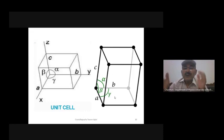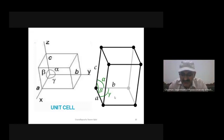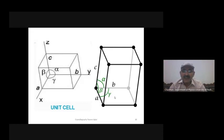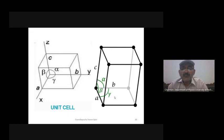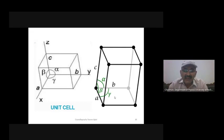The lattice parameters of a crystal are a, b, c and alpha, beta, gamma. As you move from lower symmetry towards higher symmetry, the number of independent lattice parameters decreases. In the cubic system — the most symmetric — only a is needed to describe the unit cell, since all angles are 90° and a=b=c. In orthorhombic, angles are all 90° but a≠b≠c, which represents lower symmetry.